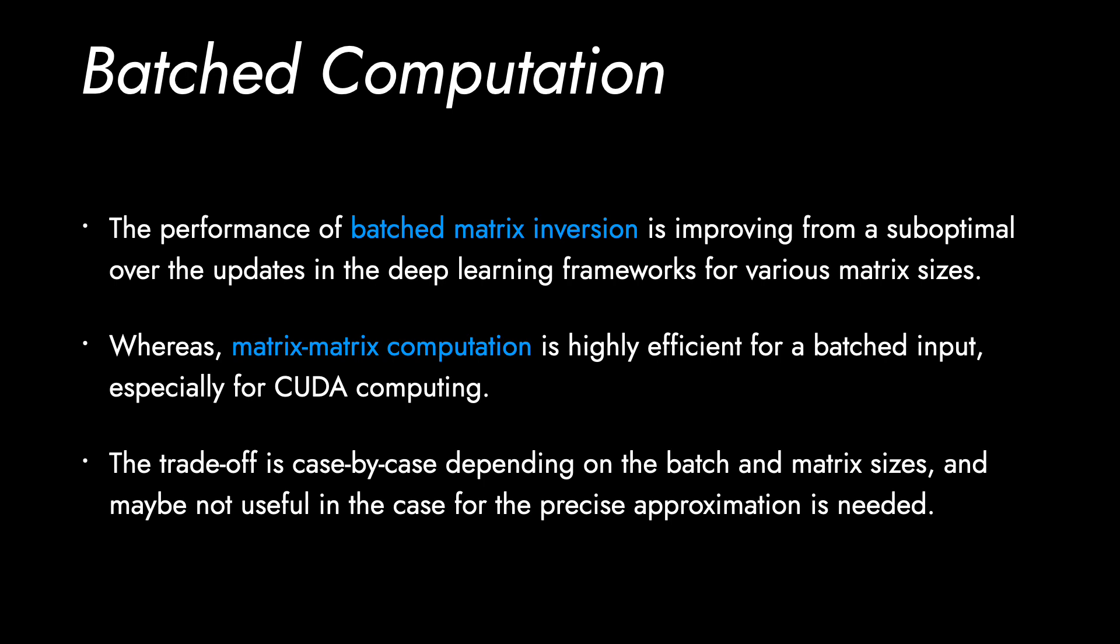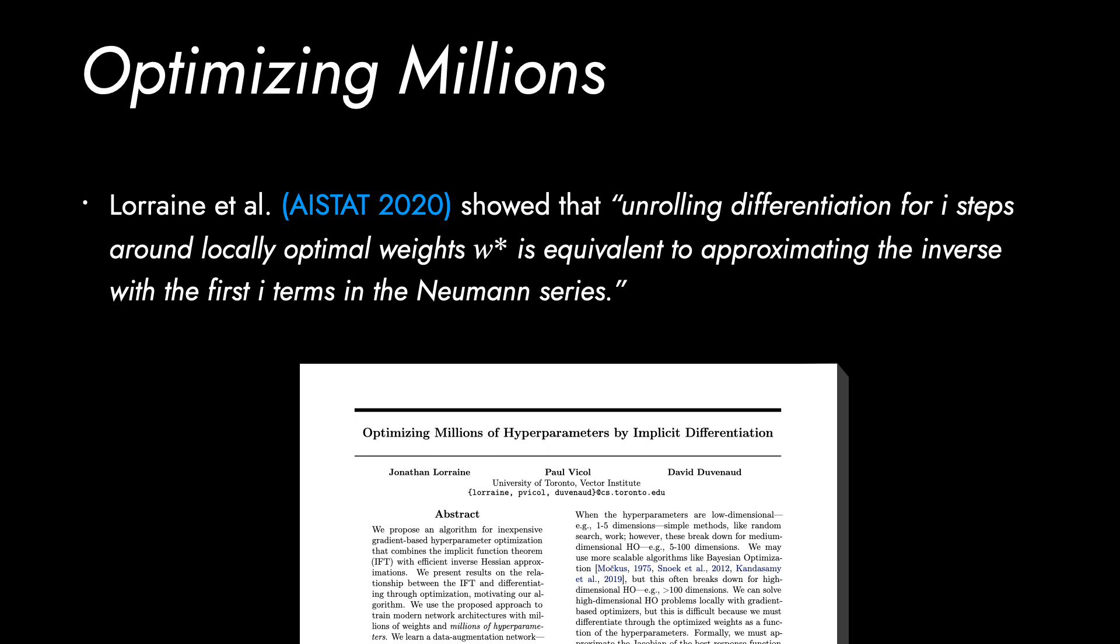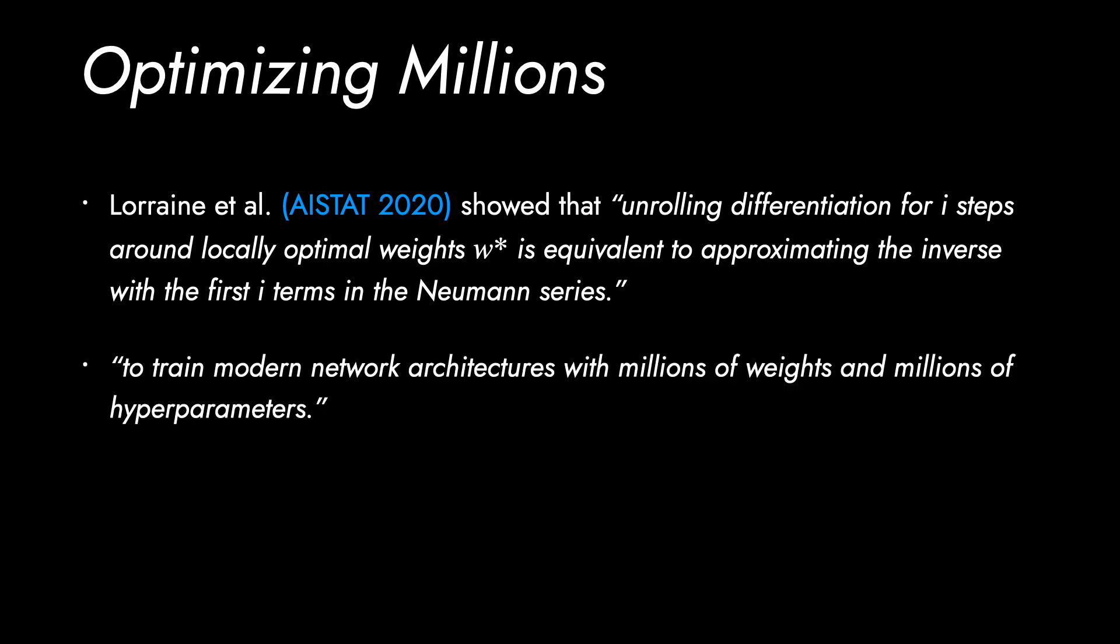Here, I want to introduce a successful application of Neumann series in one of recent papers. A meta-learning paper used the Neumann series for the estimation of inverse of Hessian matrix. Lorraine and colleagues noticed that unrolling differentiation for i steps around locally optimal weights is equivalent to approximating the inverse with the first i terms in the Neumann series.